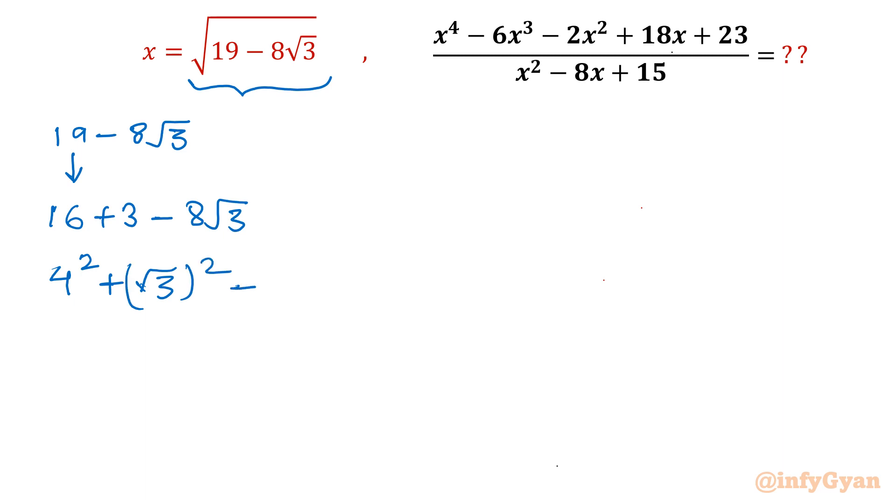3, what we can write? (√3)^2. And see, minus sign in between. This is a^2, this is b^2. Let us check twice ab: two times, our a is 4, b is √3. So yes, it is a^2 + b^2 - 2ab. So this one is (a - b)^2.